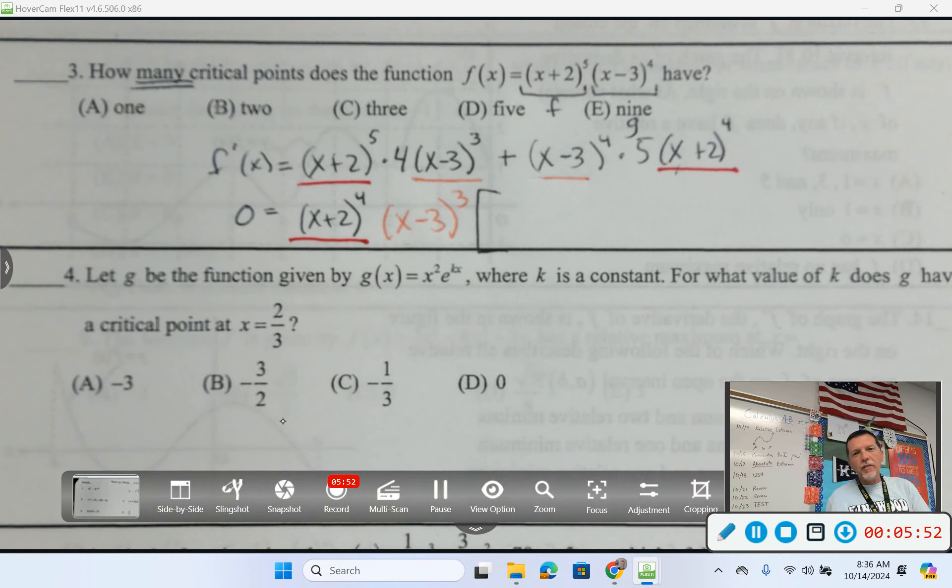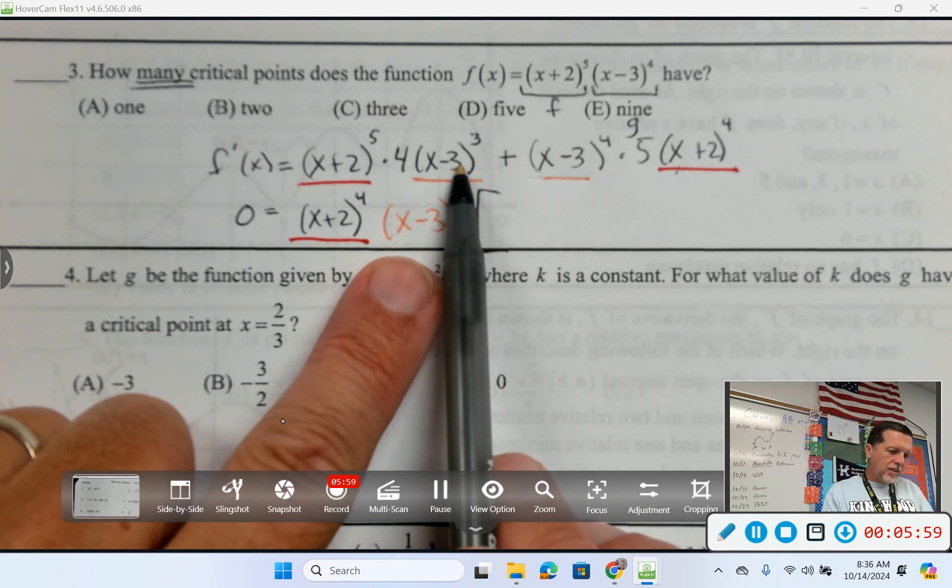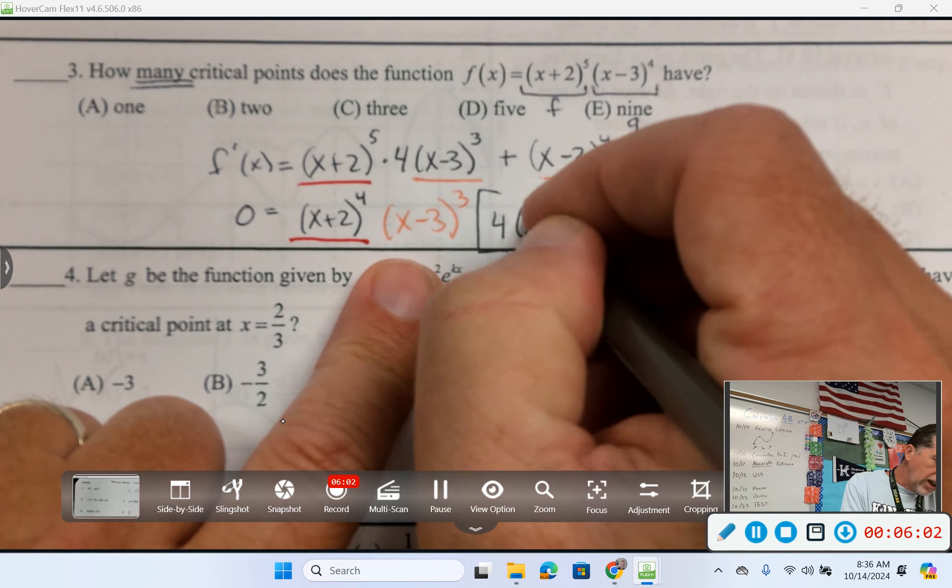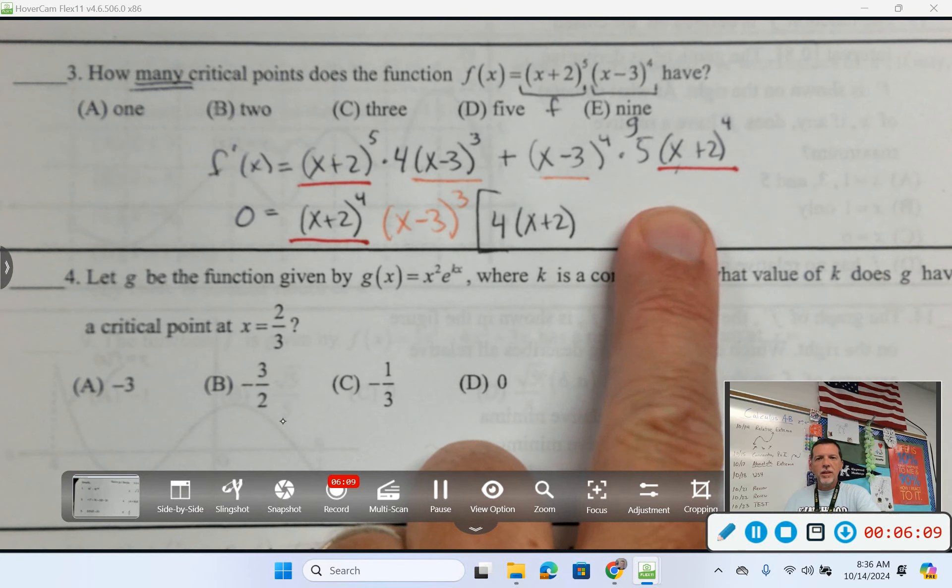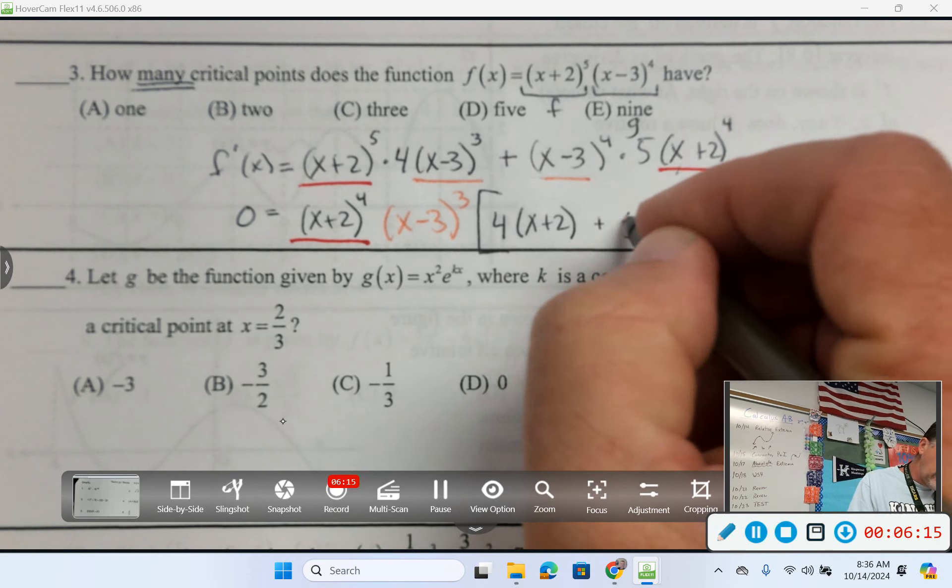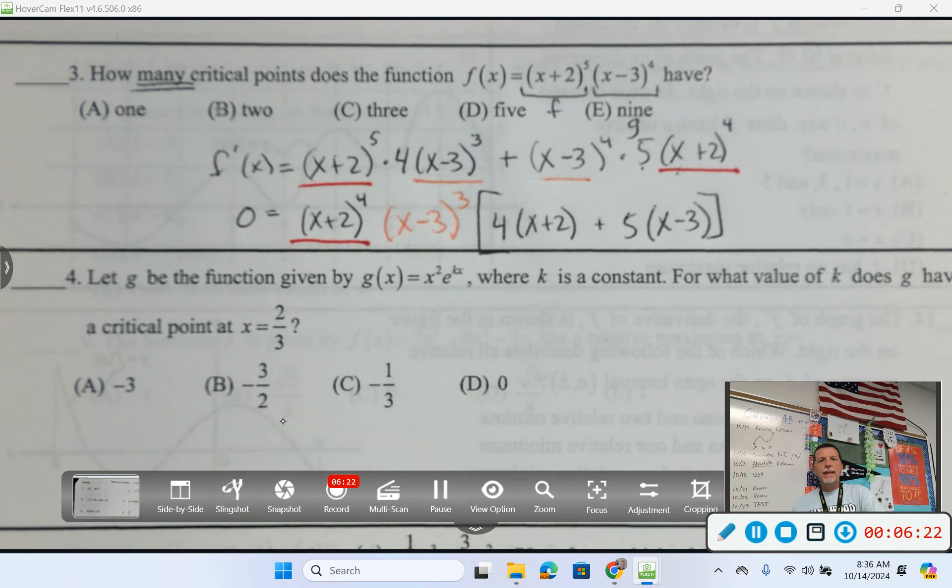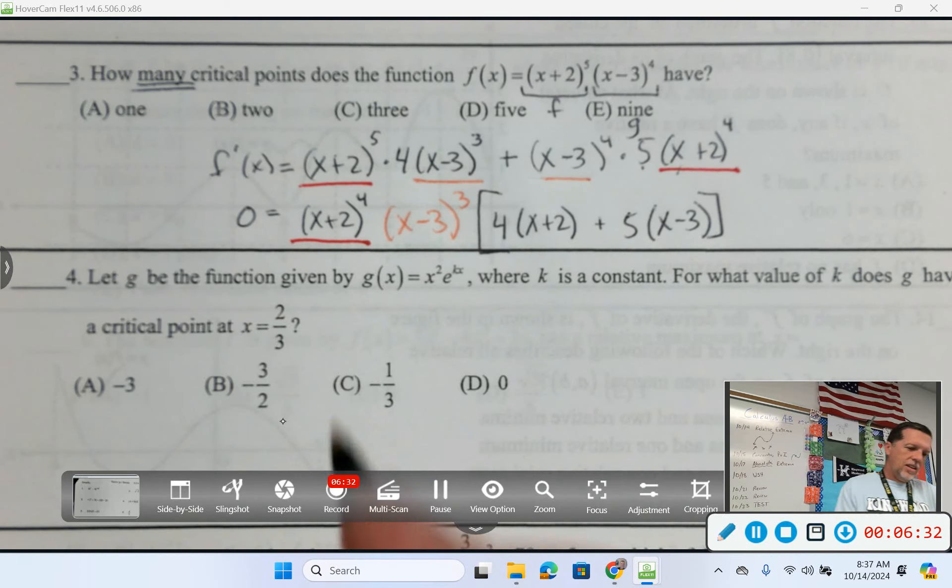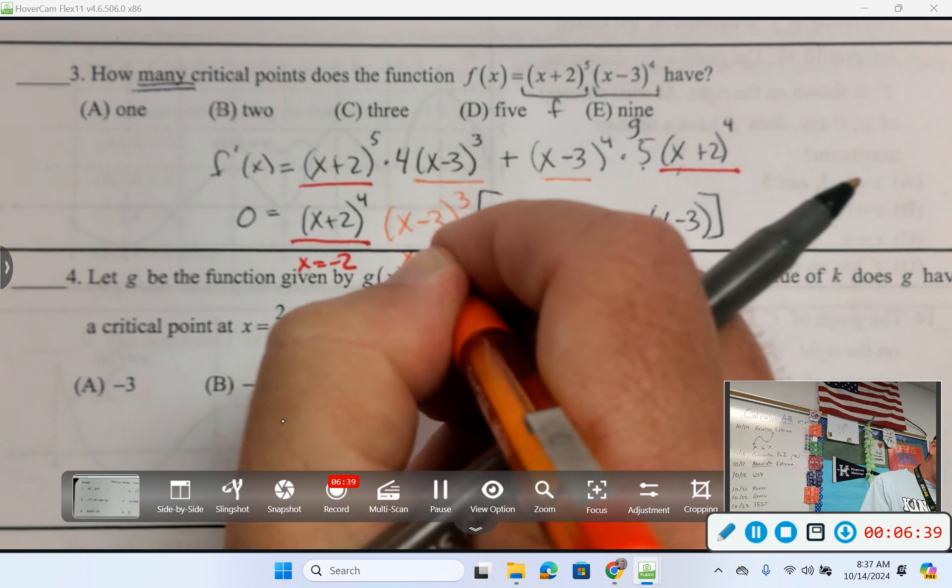And then let's be super careful about what's left. So on the first term, I took all of the x minus 3's, but that leaves a 4 and an x plus 2. On the second term, I took all the x plus 2's, that leaves a 5 and one of the x minus 3's. Okay, now I've got this thing factored, now can you tell how many critical points that thing has? So this would give me one, x equals negative 2, this would give me another one, x equals 3, and I don't even need to find this one, it's going to be one more though.